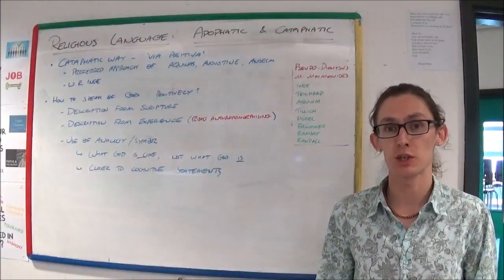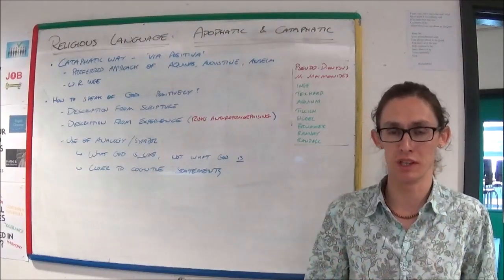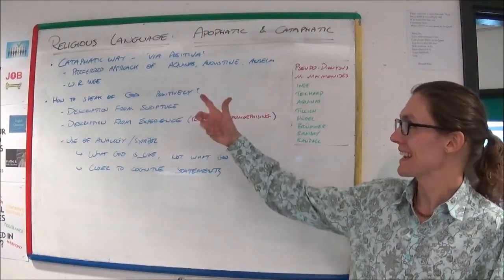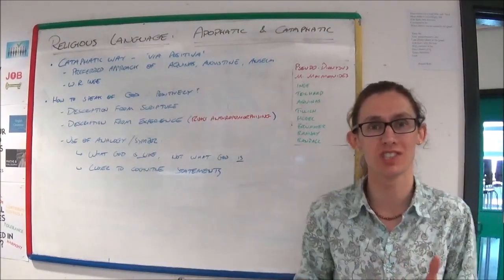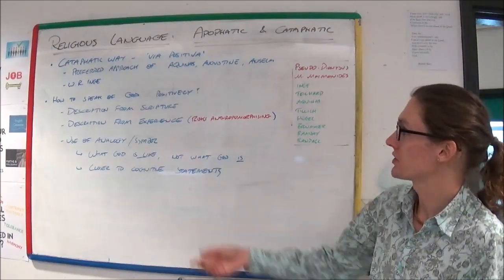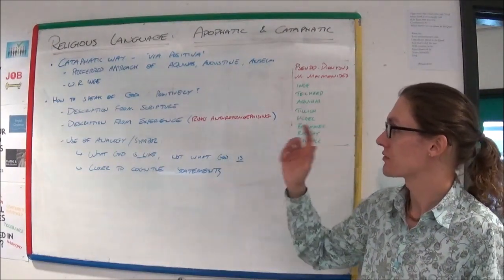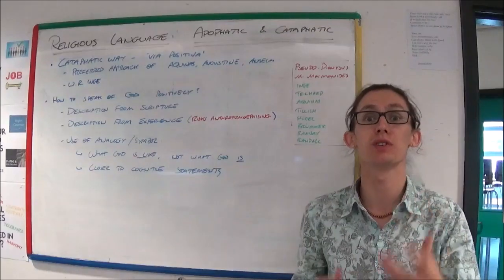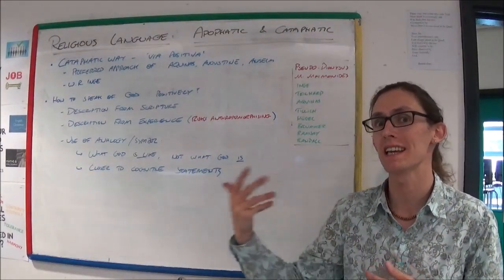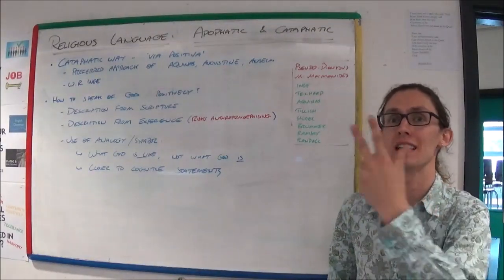So we've looked at the apophatic way, and there were problems with it. Let's now have a look at the cataphatic way, or the via positiva. Now, this suggests that, in fact, you can say positive things about God. God is this. God is that.